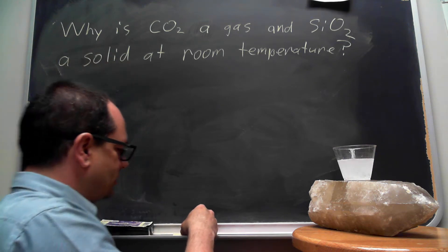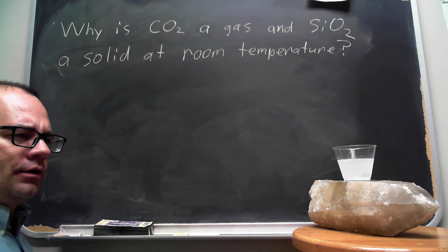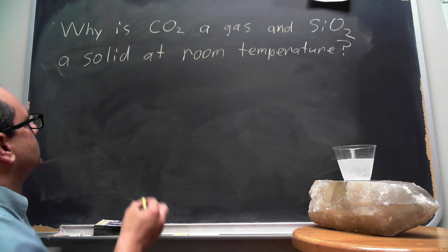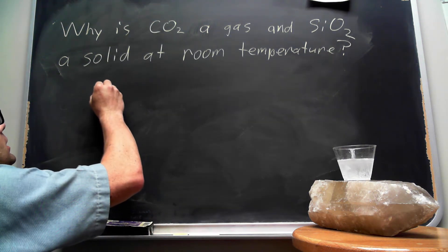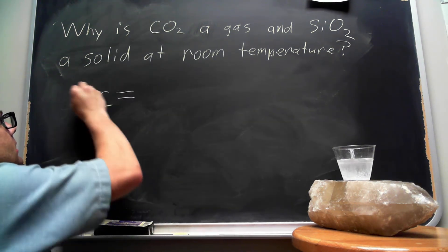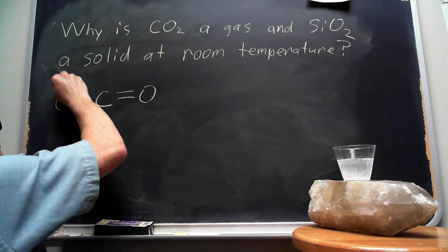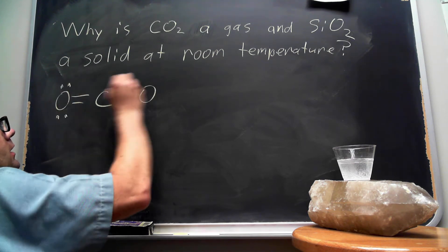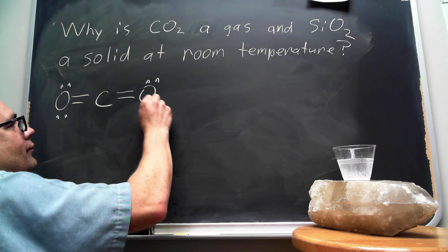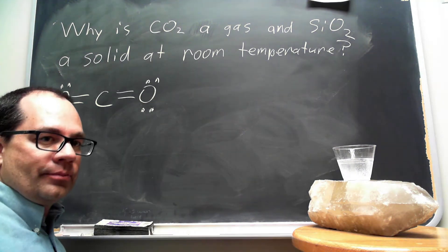Now to address the question we need to know how to draw the structure for these materials, for these substances. Carbon dioxide has a Lewis structure that looks like this where carbon forms two double bonds.